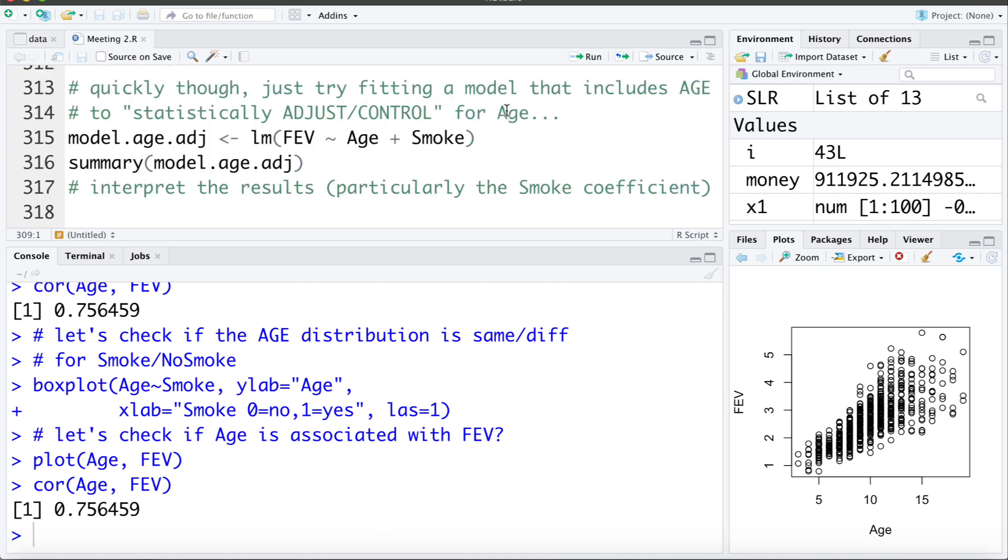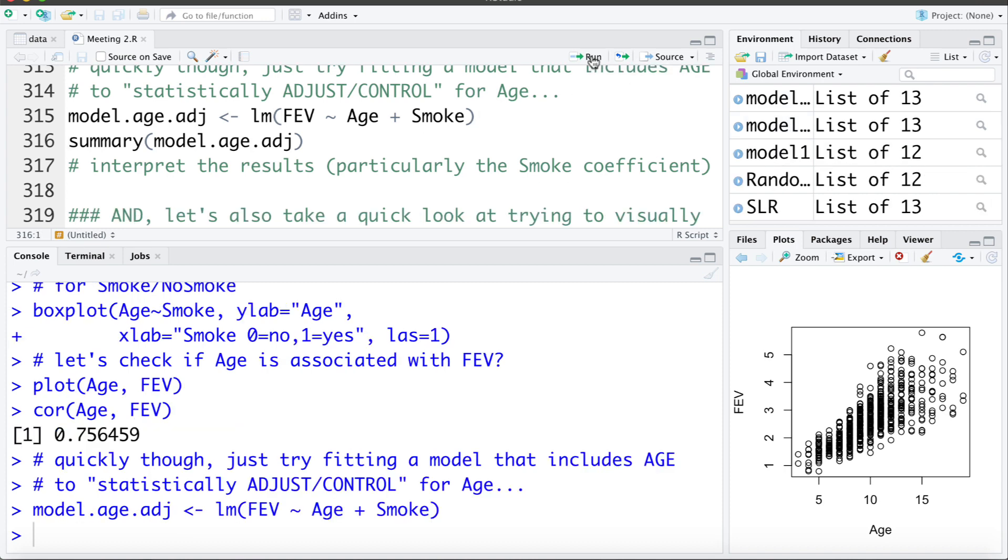Let's quickly look at what happens if we fit a model that includes age so we can adjust for it statistically. So here what we are going to do is fit a linear regression model that uses both age and smoking to estimate FEV. So what we are trying to do here is find out the effect of smoking on FEV adjusted for age. So let's fit that model and let's take a look at a summary of it.